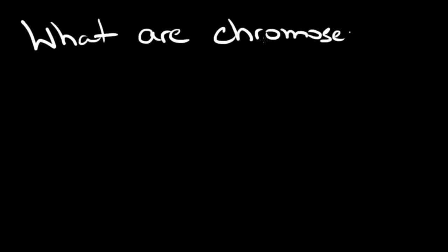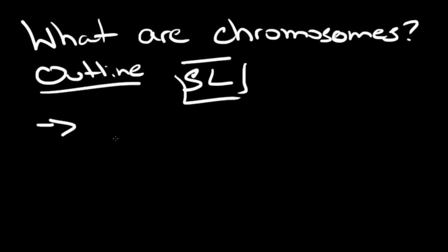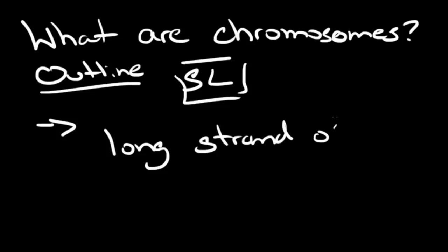Our first question: what are chromosomes? The general question you'll get on a test or on the exam would be, for example, "outline a chromosome." Now, for SL, remember, what a chromosome is — it's just a long strand of DNA. On higher level you wouldn't get away with just saying a long strand of DNA, but on standard level you're fine. That's basically all you have to know.